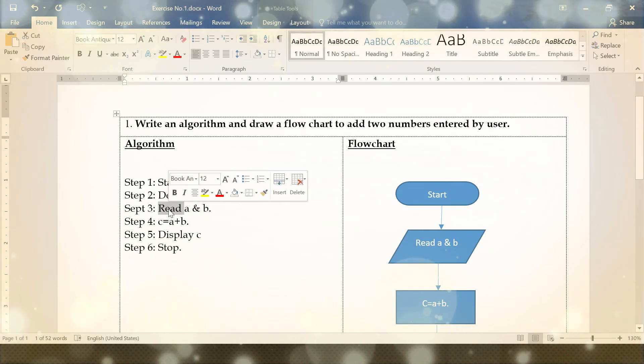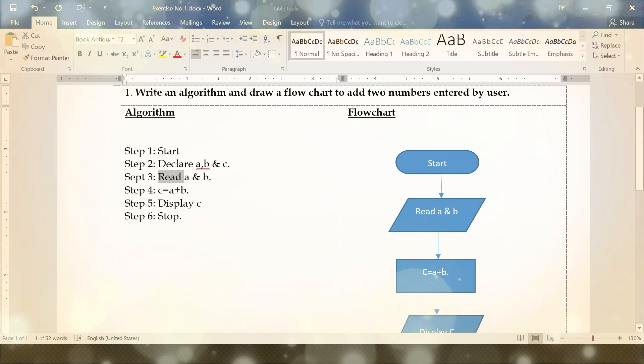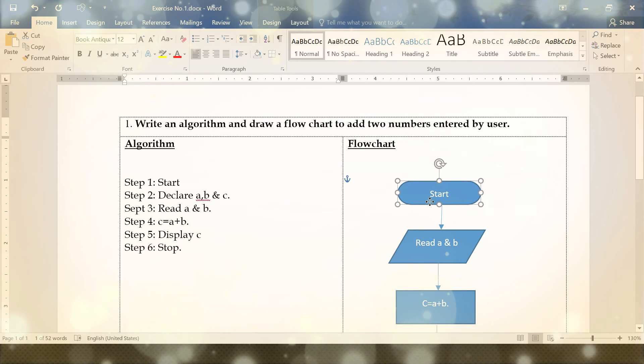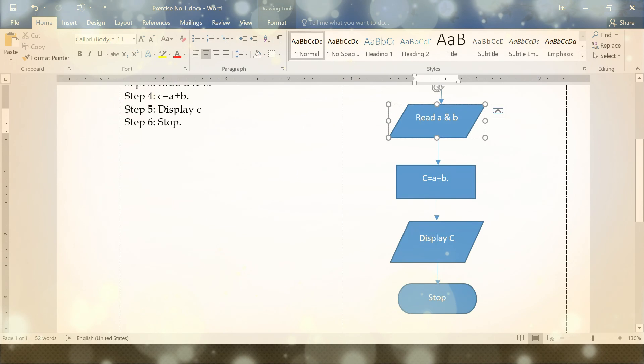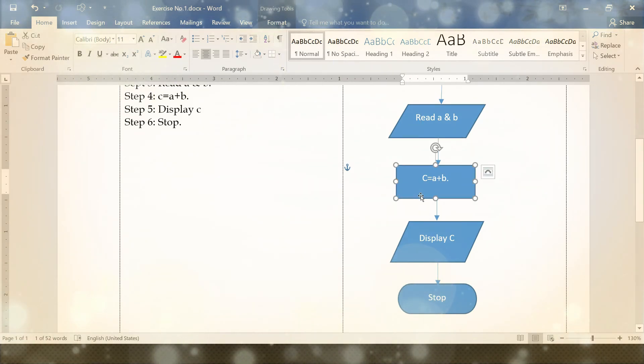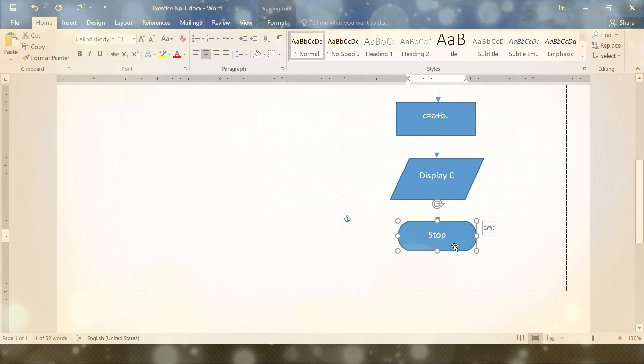Step four, once the values are available, we do the calculation c equal to a plus b. Step five, display the result c. And step six is stop. This symbol is for start, the parallelogram for reading input, the rectangle for process or calculation, parallelogram for display, and oval for stop. I think you guys have enjoyed this video. Thanks for watching.